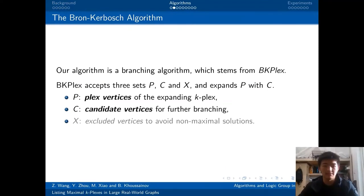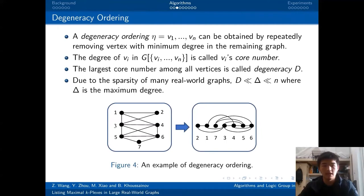The set P contains vertices of the expanding k-plex. The set C contains candidate vertices for further branching. The set X contains excluded vertices. The set X is not very important in this talk. The only thing you should know is to avoid the non-maximal solutions, the set X is necessary.